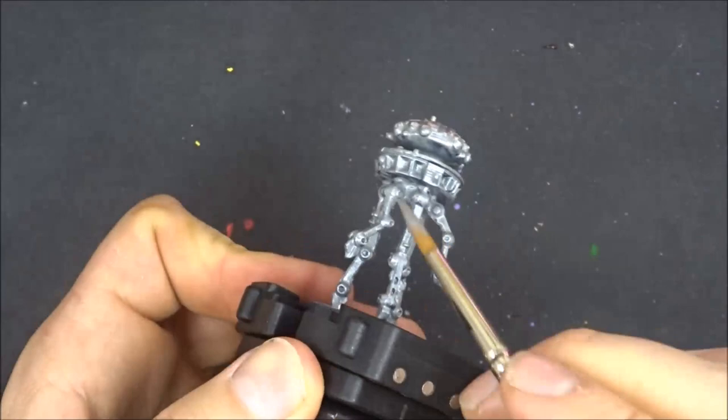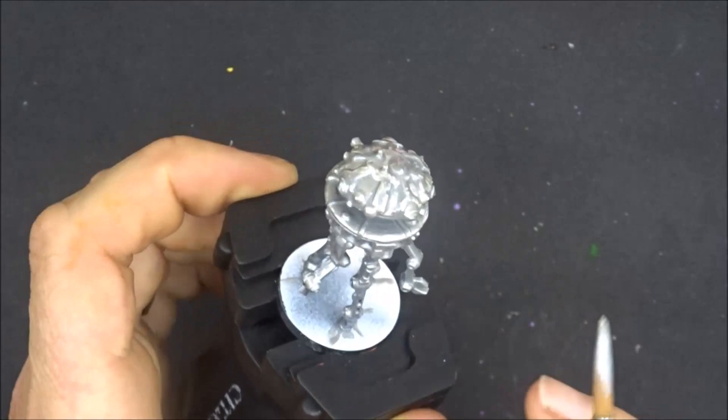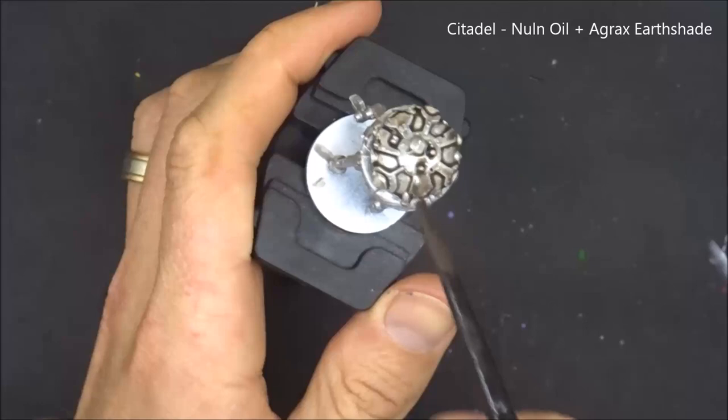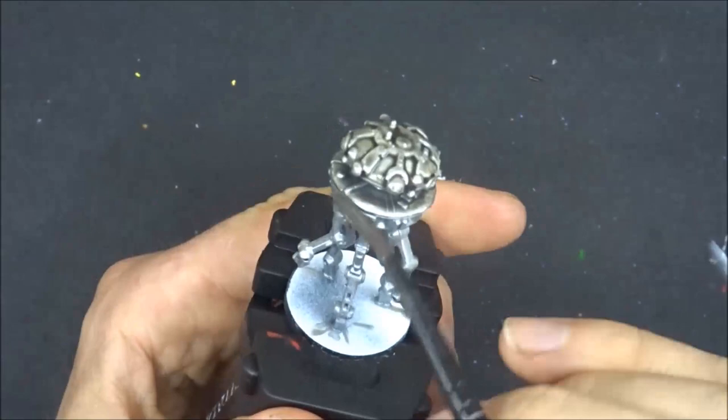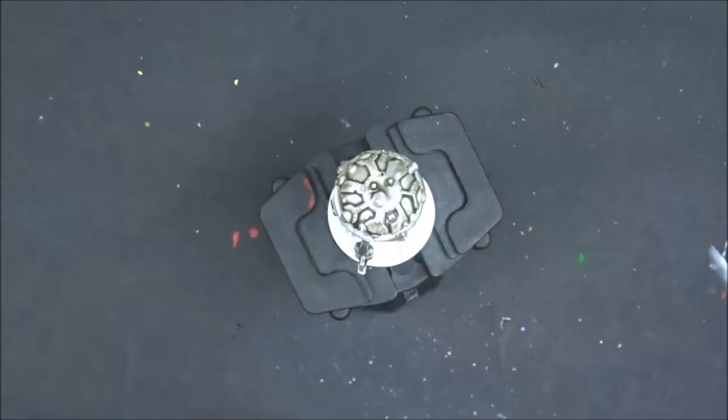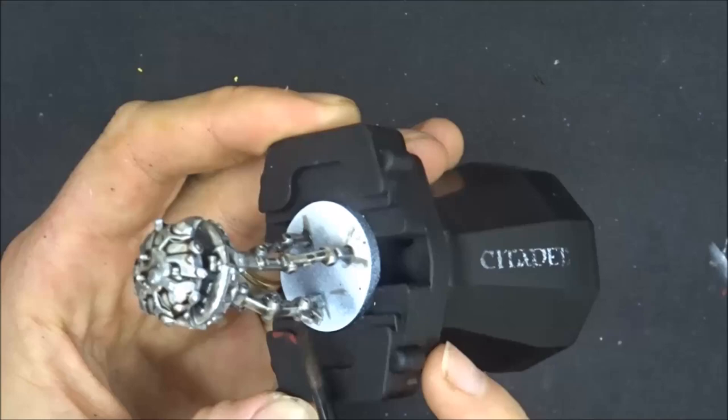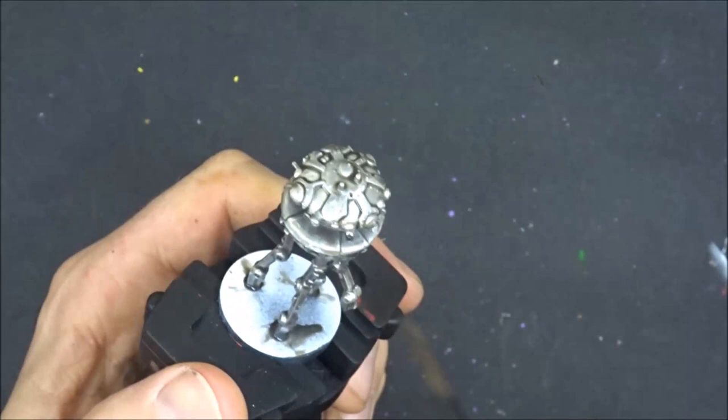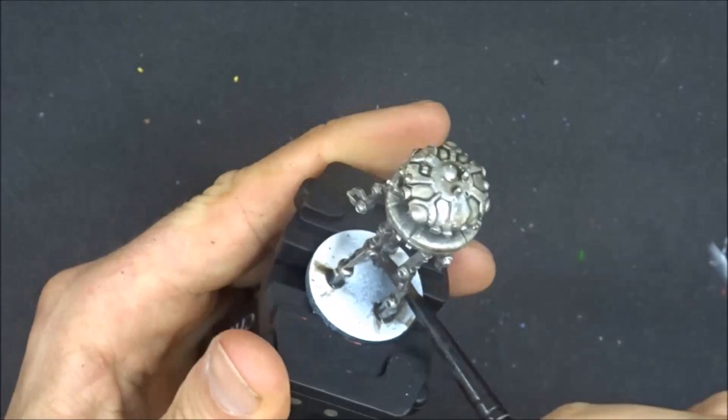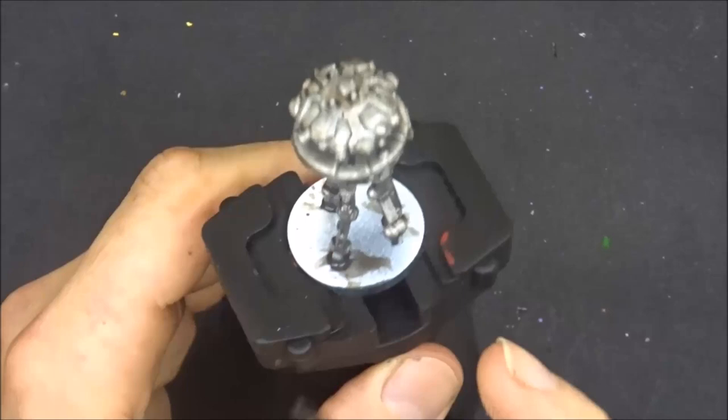First coat is just with that blade steel just to give that metallic finish because now I'm going over with a mix of Nuln Oil and Agrax Earthshade. This is just going to fall into all those recesses, bring out all of the details and just knock down that metallic finish a bit. It still looks like it's made of metal but just really helps to bring out all of those details. It's not a highly reflective surface, it is quite dull but it does definitely look like it's made of metal.